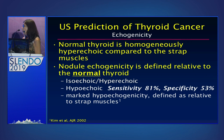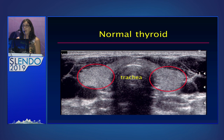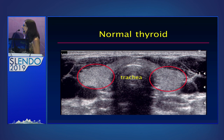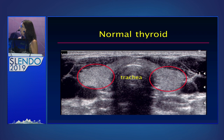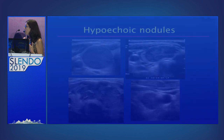People have even begun to talk about nodules that are so dark that they're as dark as the surrounding strap muscles. This is an example of a normal thyroid. If you look at the lobes of the thyroid on the left and the right side, you can see how bright gray they are compared to the surrounding strap muscles.